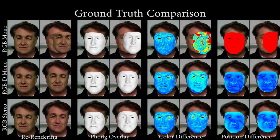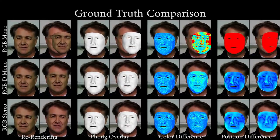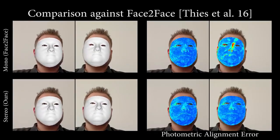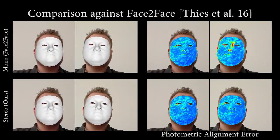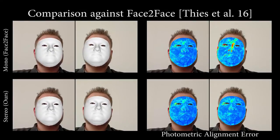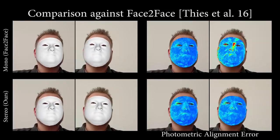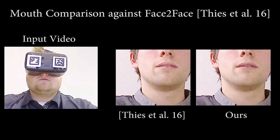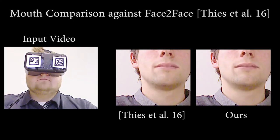We evaluate our novel stereoscopic face tracking approach using a high-quality stereo reconstruction as reference. Here we show a direct comparison to face-to-face based on our stereo camera setup. We achieve consistently lower photometric error in both views, which is essential for tracking and reenacting VR content. In contrast to face-to-face, which does not track and transfer eye motion, we also improve the re-rendering of the mouth interior using a saliency-based image deformation technique. This leads to more temporally coherent results, as shown on the right.